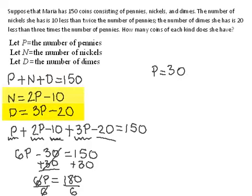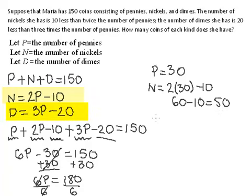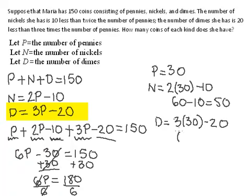Now we need to find the number of nickels and dimes. The number of nickels is 2P minus 10, substituting P equals 30: 2 times 30 is 60, minus 10 equals 50. So N equals 50. The number of dimes is 3 times P minus 20, so 3 times 30 is 90, minus 20 equals 70. So D equals 70.